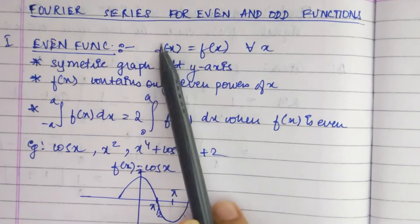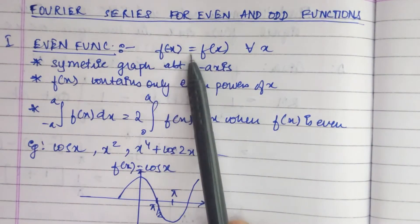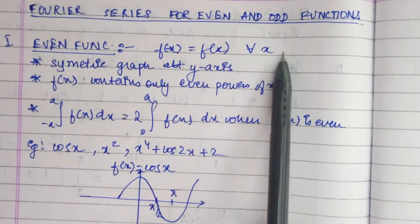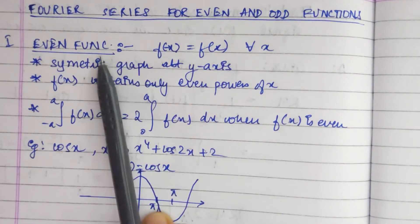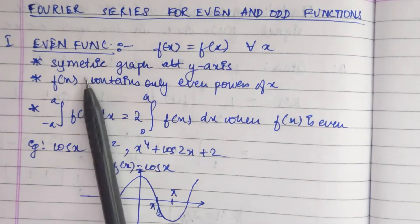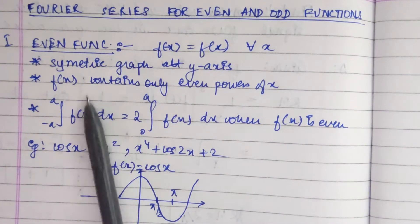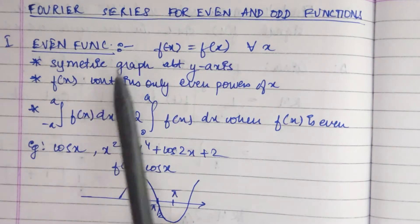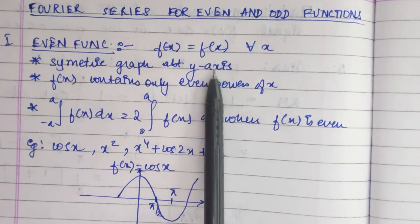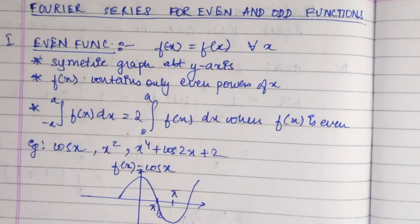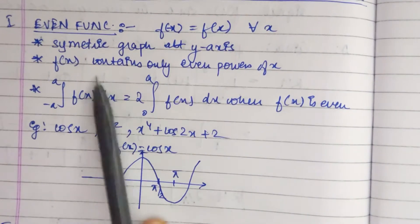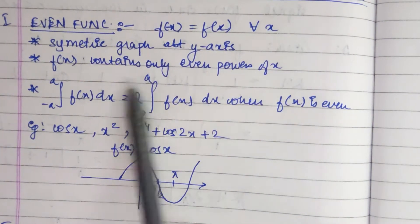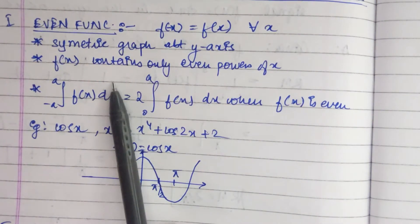When a function f of minus x is equal to f of x for all values of x, it is an even function. Its graph is symmetric about the y-axis, and f of x contains only even powers of x, making it an even function.